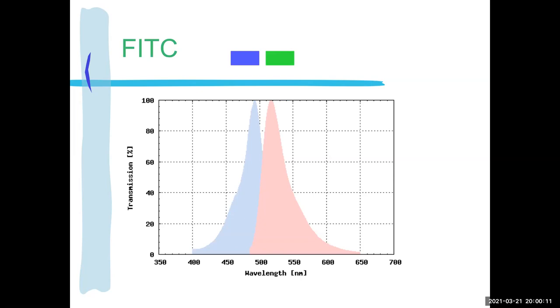So let's look at some spectra — now we're just looking at the spectra of a particular fluorophore. I've drawn little triangles of colors above these because that's what the colors actually are.